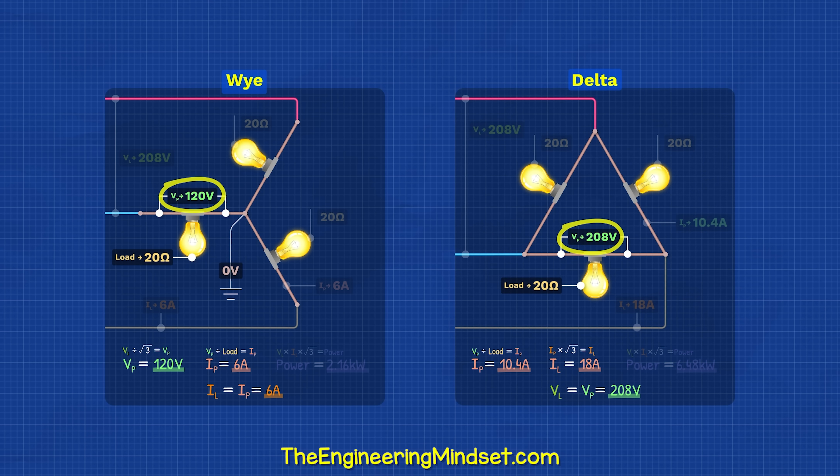The delta can deliver much more power, but it can only power balanced three phase loads. If you need a neutral, then we need to use a Y configuration.